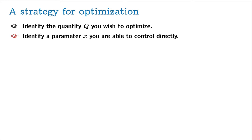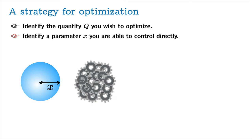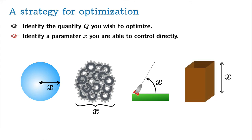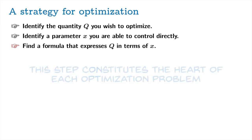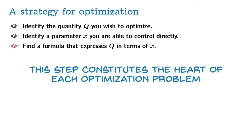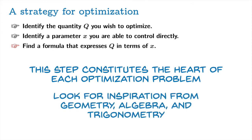Next, identify a parameter X that you're able to control directly. This will look very different in each problem. You might be choosing the radius of a sphere, or the number of widgets to build in a factory, or the angle of elevation of a rocket launch, or the height of a box. Then find a formula that expresses Q in terms of X. This step constitutes the heart of just about every optimization problem — each problem has its own character here, and you want to look for inspiration from geometry, algebra, and trigonometry, looking for relationships between different quantities.